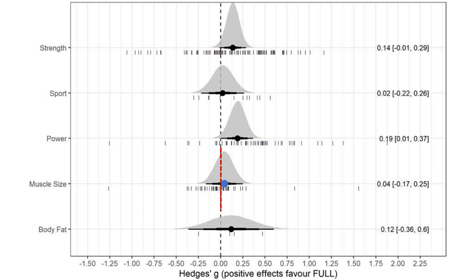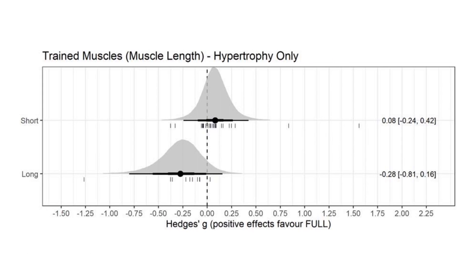However, interestingly, a subgroup analysis found that the specific type of partial range of motion implemented had a larger impact on muscle growth. When the partial range of motion is performed through the range where the muscle is at a shorter position, it tends to be inferior to full range of motion training. Whereas when the partial range of motion is performed through the range where the muscle is at a longer length, it tends to be superior to full range of motion training.